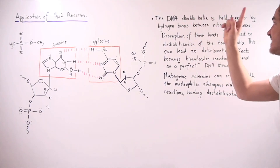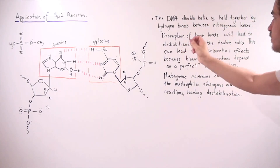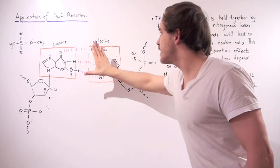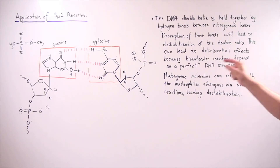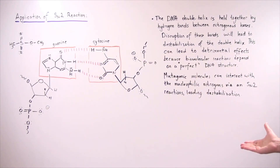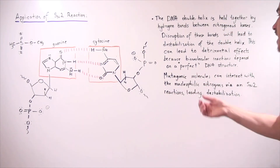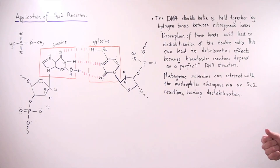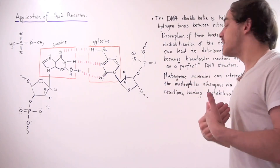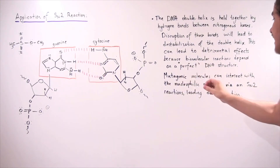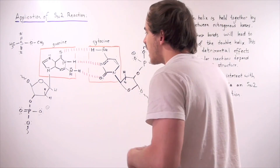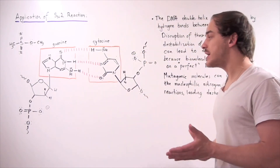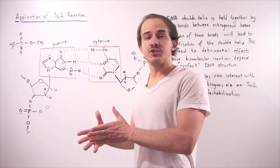The DNA double helix is held together by hydrogen bonds between the nitrogenous bases. Disruption of these bonds leads to destabilization of the double helix, which can cause detrimental effects since biomolecular reactions depend on a perfect DNA structure. Mutagenic or carcinogenic molecules found in the air or things we ingest can interact with the nucleophilic nitrogens via an SN2 reaction, leading to destabilization and potentially to cell proliferation and cancer.